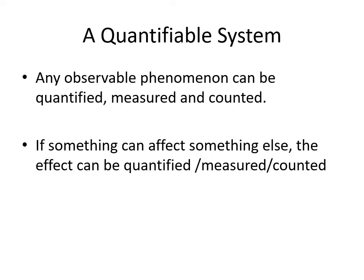A quantifiable system is any observable phenomenon that can be quantified, measured, and counted. In other words, if something can affect something else, that effect can be quantified, measured, and counted. It doesn't really matter what it is.